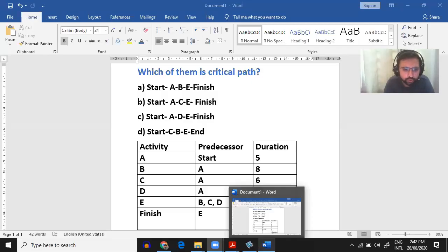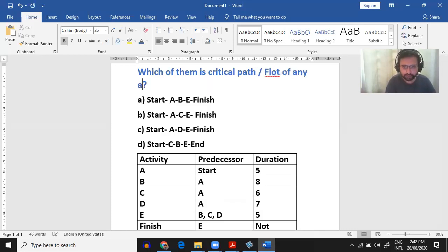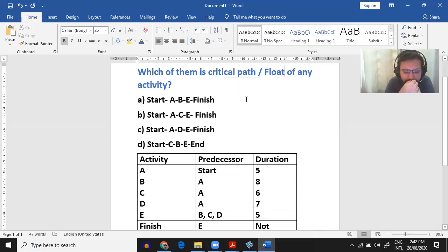So this is our question. We need to find critical path. Now here is being asked critical path. Maybe they can ask you float of any activity. Float of any activity or whatever they can ask you. Now we have four options.